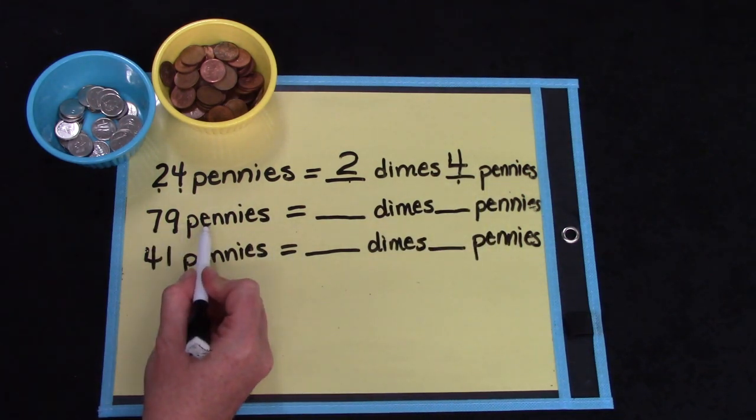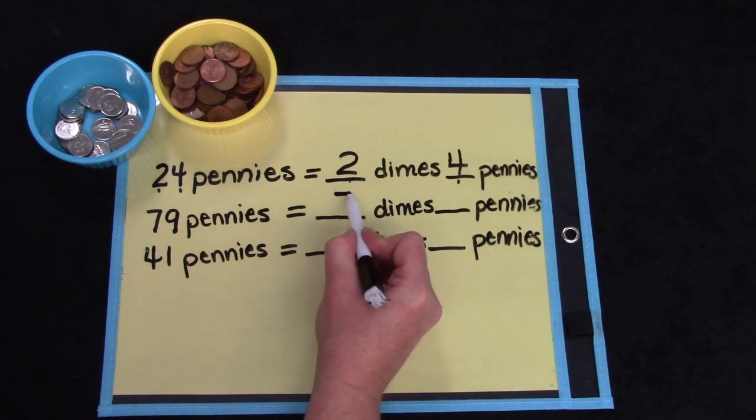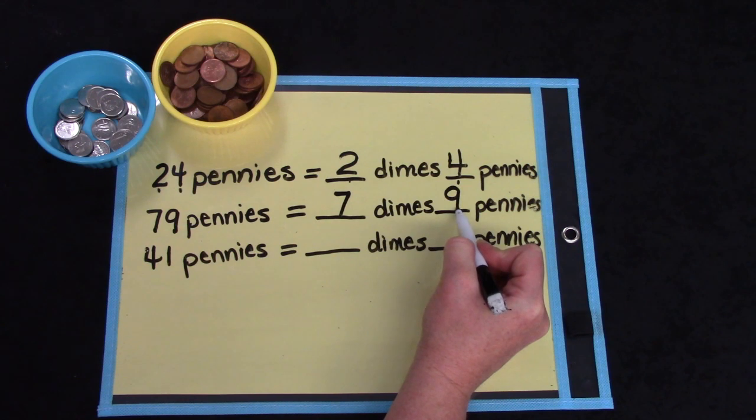For 79 pennies, how many dimes and how many pennies do we have? You're right. Seven dimes and nine pennies.